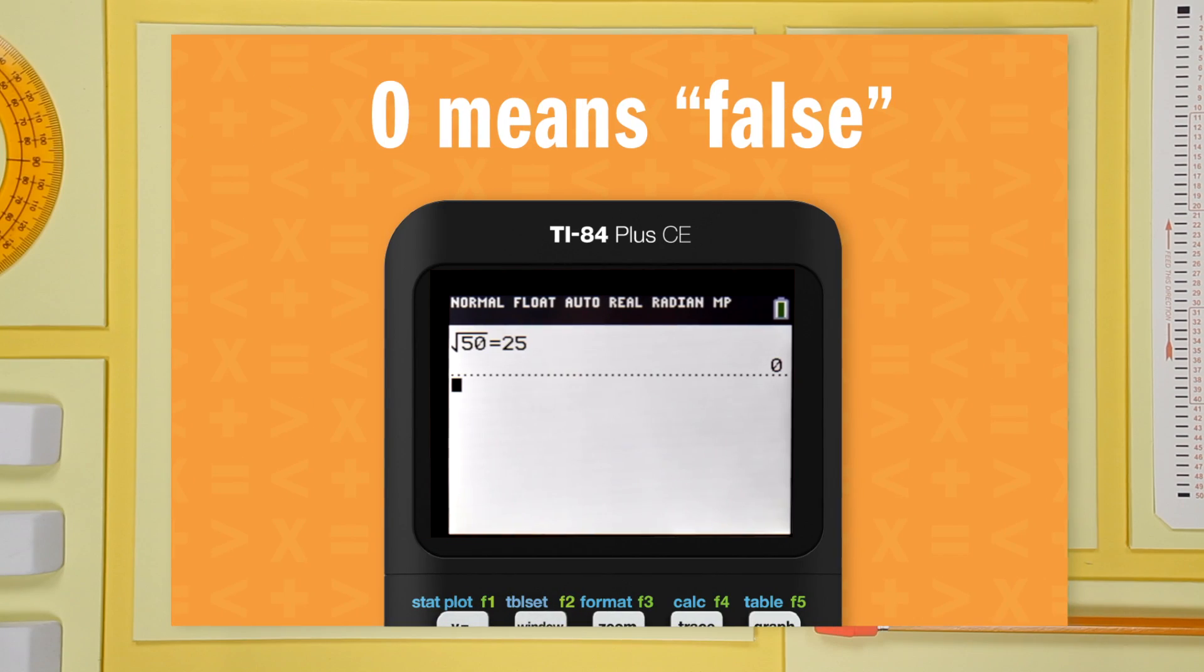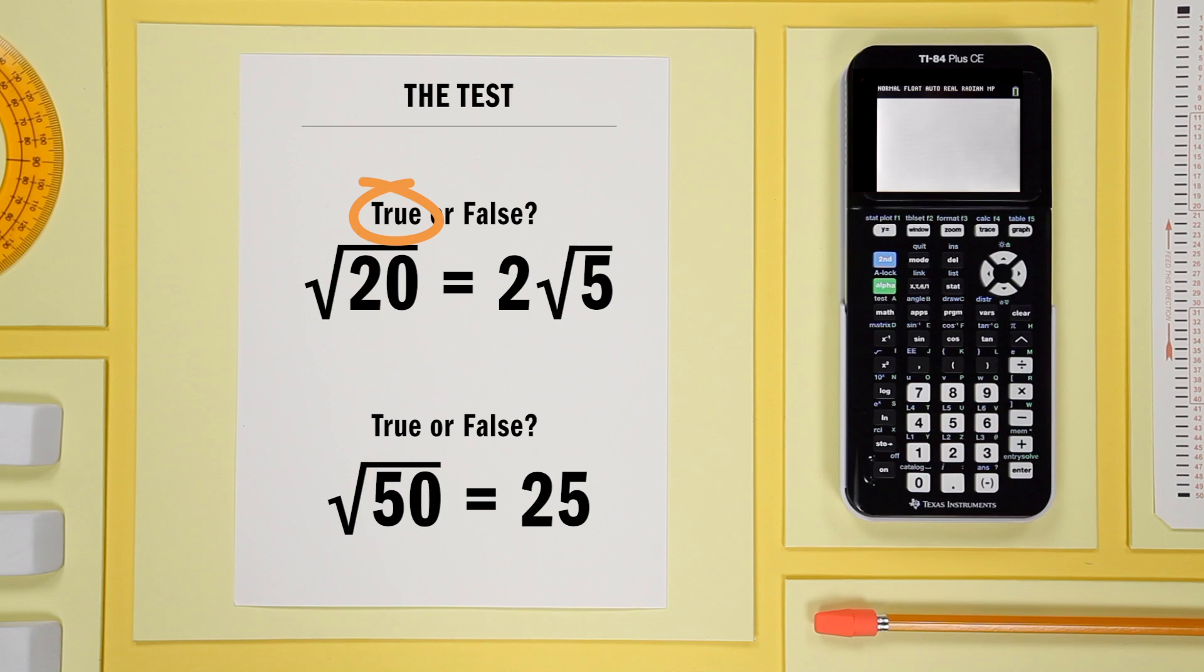What's different? Right. The result is zero. That means the statement is false. So the expressions are not equivalent.